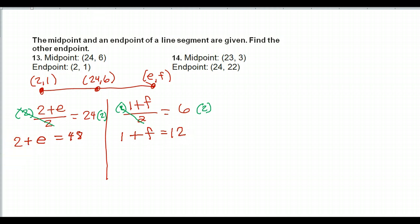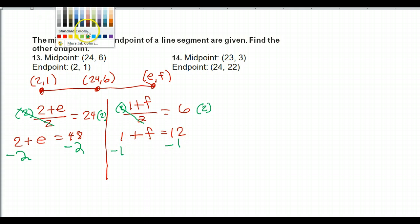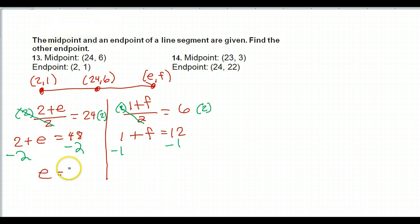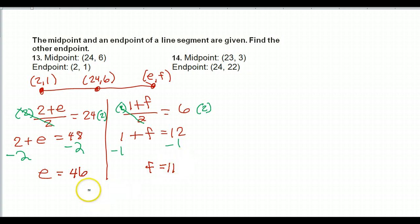Let's subtract 2 from both sides and subtract 1 from both sides. That's going to give us E equals 46. This gives us F equals 11. So the answer for the other endpoint would be (46, 11).